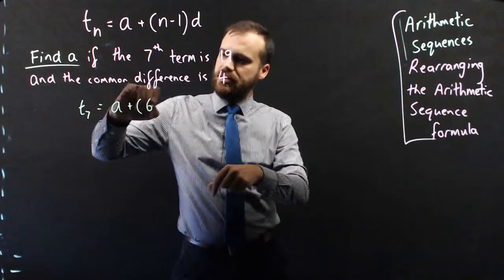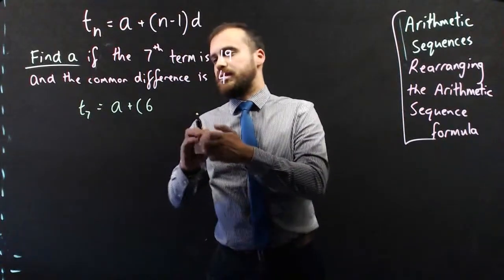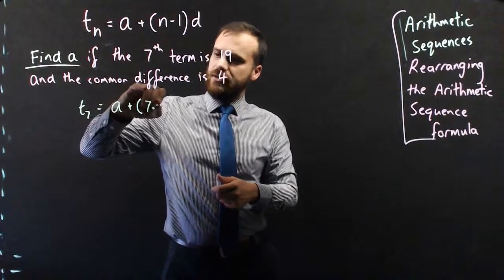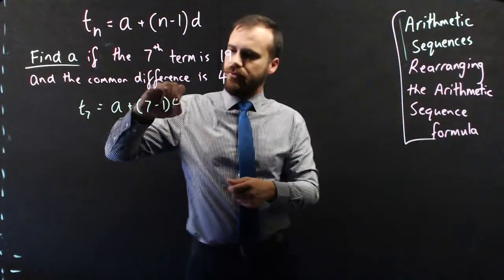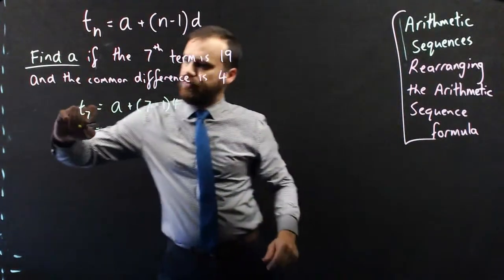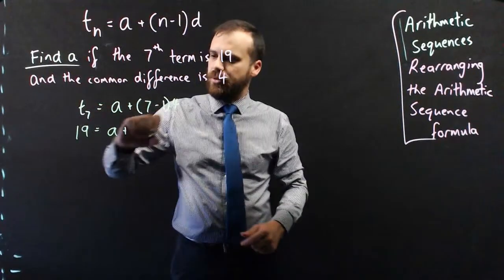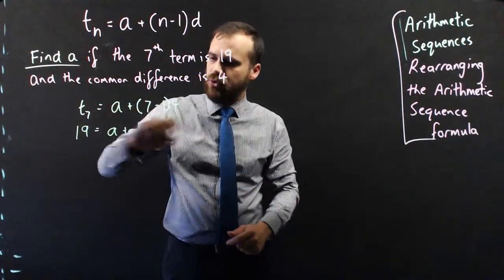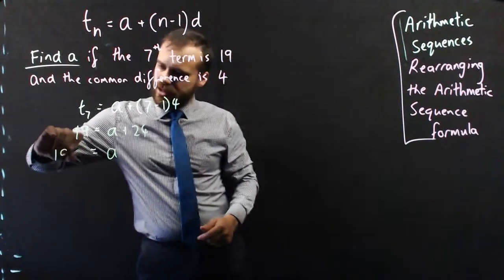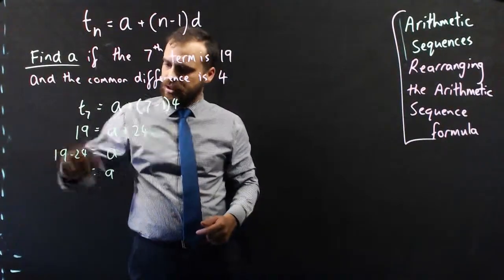Sorry, N is going to be 7 because we're talking about the seventh term. 7 minus 1, and the common difference is 4. Now term 7 was actually 19. So 19 equals A plus 7 minus 1 is 6. 6 times 4 is 24. That means A equals 19 minus 24, which means A equals negative 5.